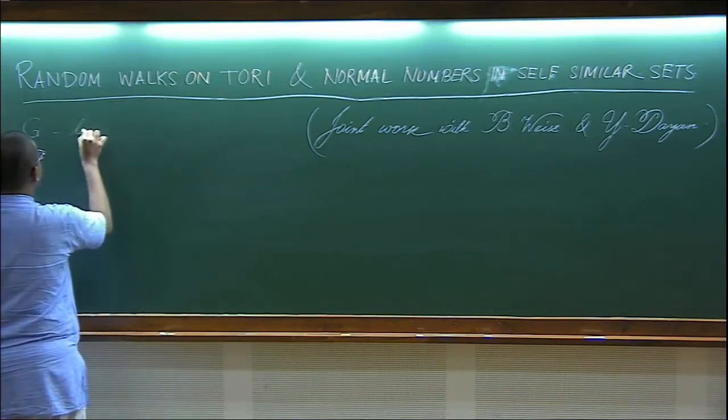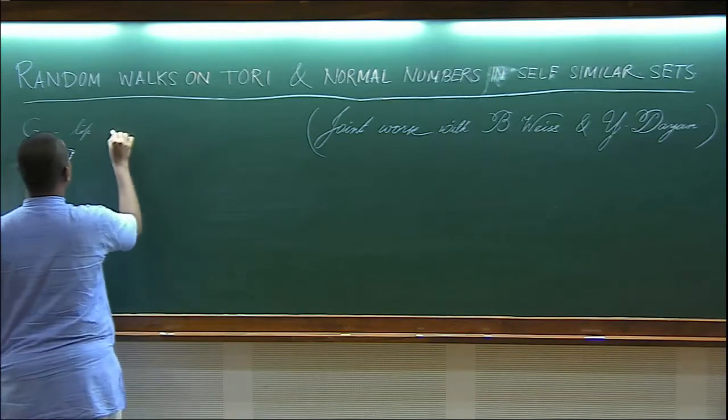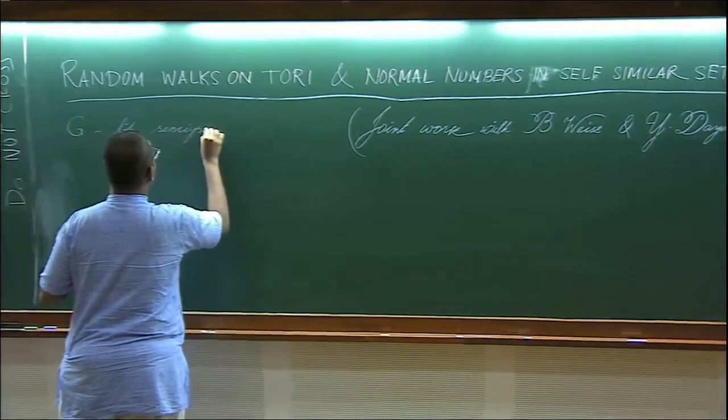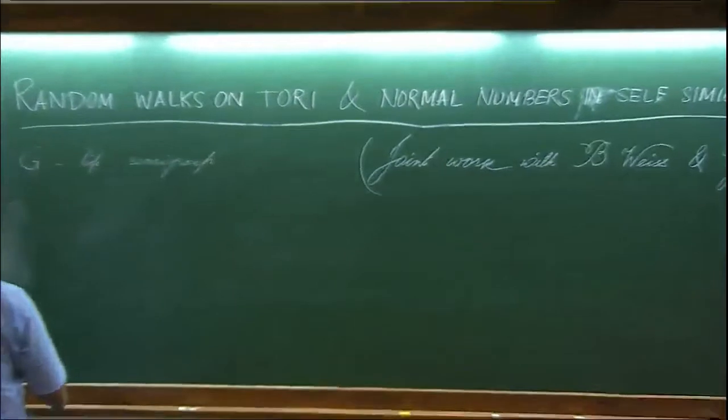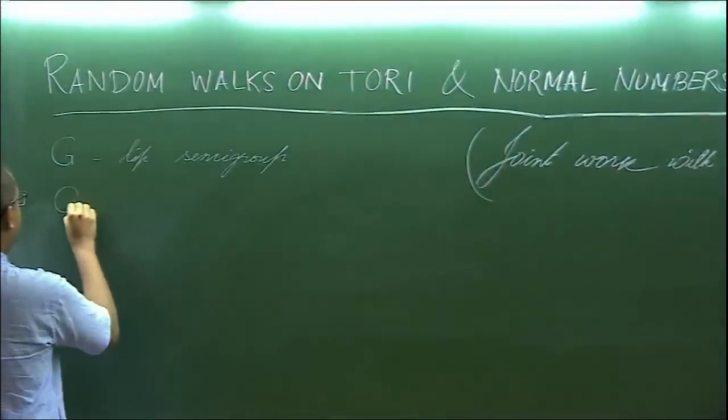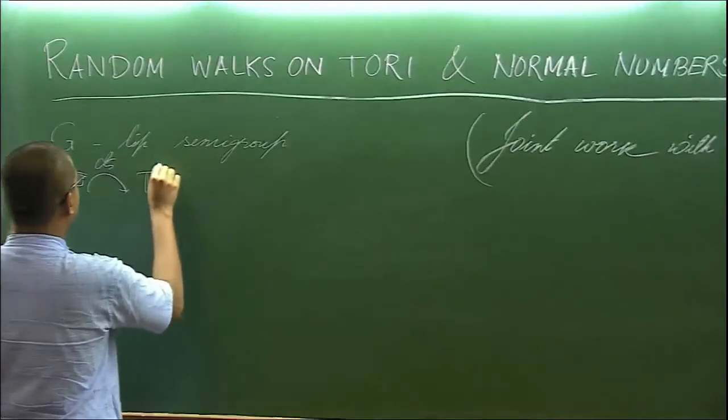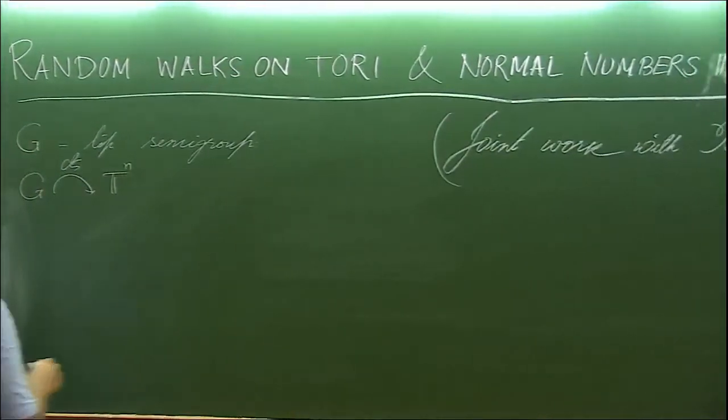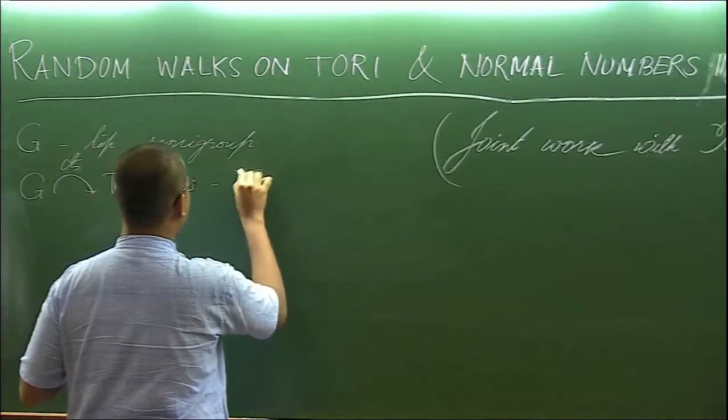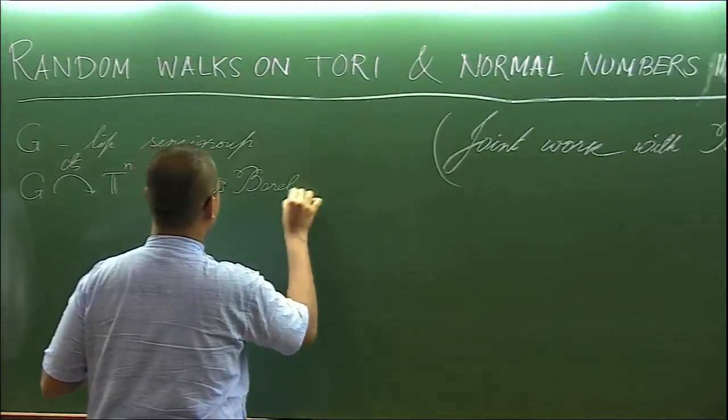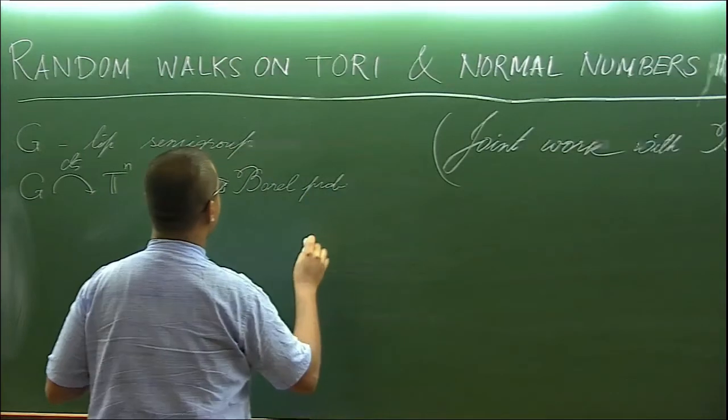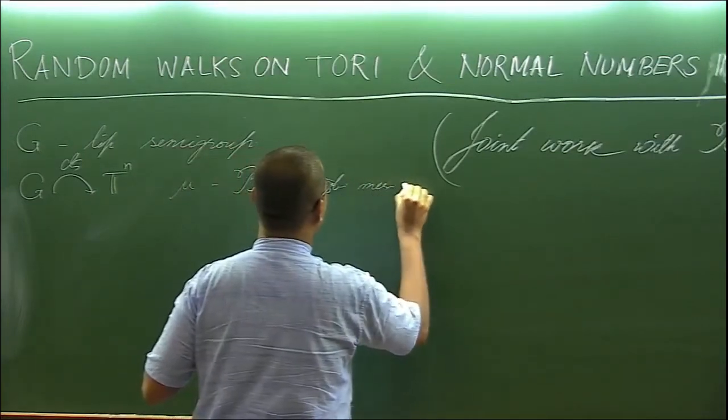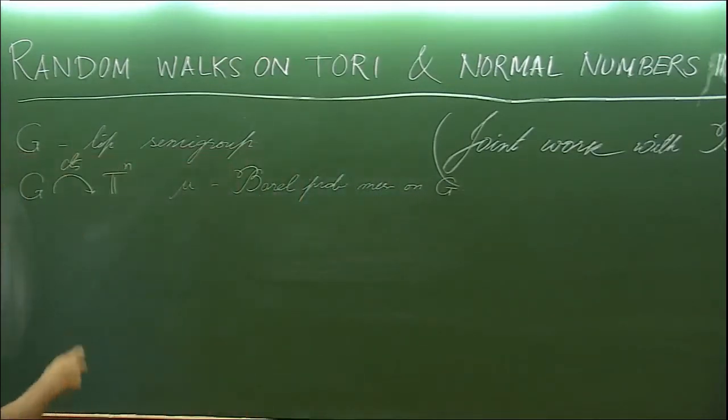Let G be a topological semi-group, assume locally compact second countable, and having a continuous action on n-dimensional torus, and fix a Borel probability measure mu on G. A random walk on that n-dimensional torus can be described informally as follows.